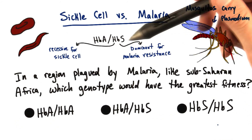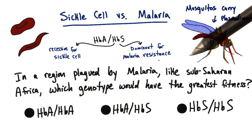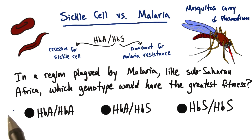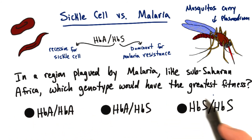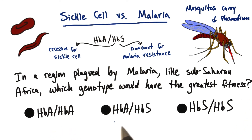So in an area plagued by malaria, like Sub-Saharan Africa, which genotype do you think would have the greatest fitness, or the greatest probability of survival? HB^A HB^A, HB^A HB^S, or HB^S HB^S? The answer is HB^A HB^S.